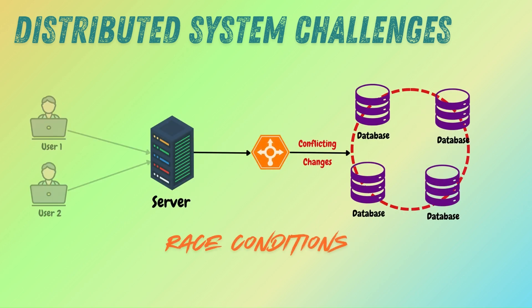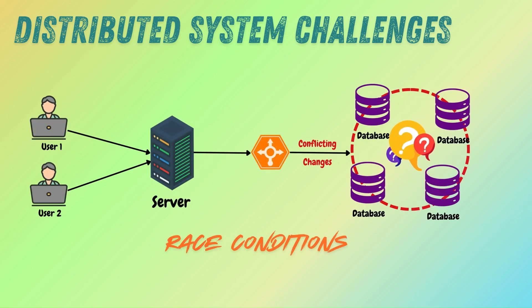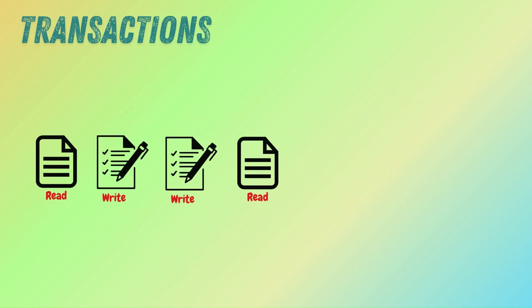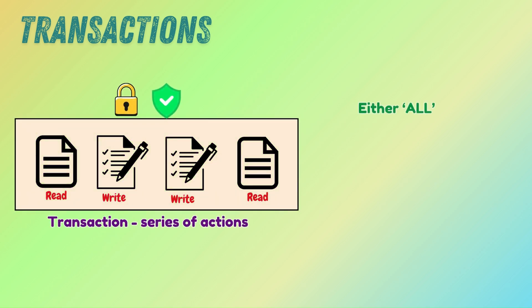These conditions between clients can lead to unexpected bugs. To avoid complete chaos in situations like these, we have transactions. Transactions let us group a series of actions, like reads and writes, into a single unit. Either all of them happen, or none of them do. Transactions make sure that even if something fails halfway, our system does not end up in a strange broken state.